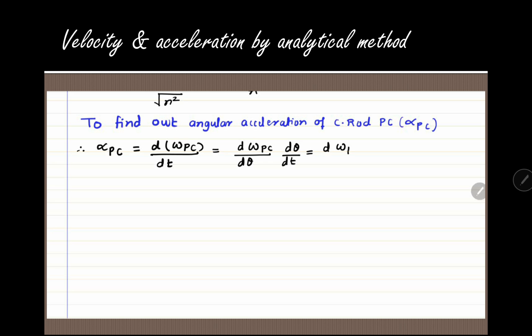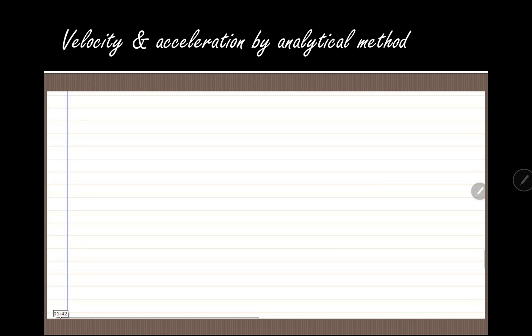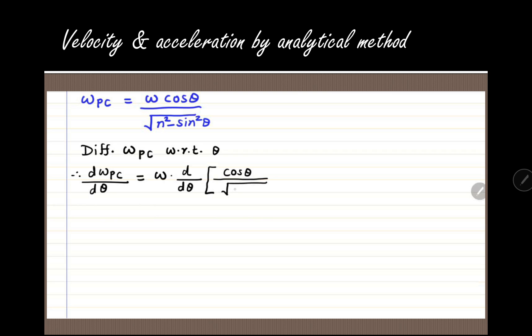Now let us derive the expression for angular acceleration of the connecting rod. Angular acceleration is the rate of change of angular velocity, so alpha PC equals d omega PC by dt. This can be written as d omega PC by d theta times d theta by dt, and since d theta by dt equals omega, we call this equation P. Our first job is to find d omega PC by d theta by differentiating the expression for omega PC with respect to theta.